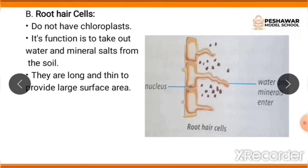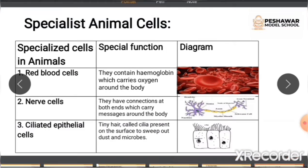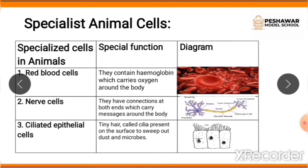Those were the two specialist plant cells. Now we are going to talk about specialist animal cells. The specialized animal cells, their special functions, and their diagrams are shown on the screen. You can also find this on page number four of the book. The first specialized animal cell is red blood cells, also known as RBCs, which contain hemoglobin that carries oxygen around the body.